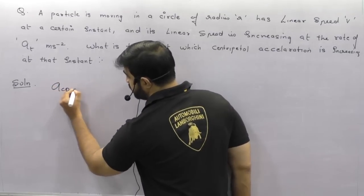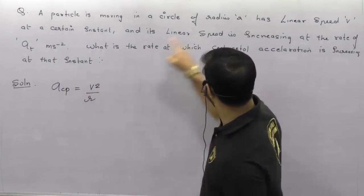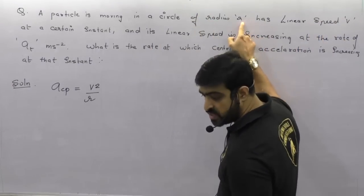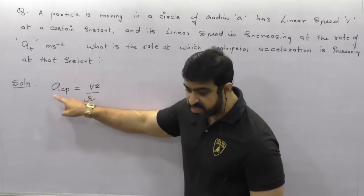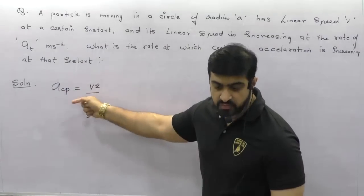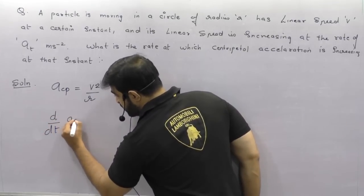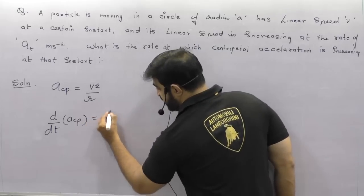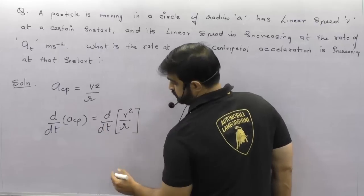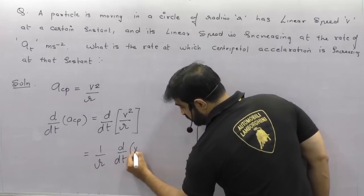We know centripetal acceleration formula is V²/R. Because they are using V in the question, we will use V only, and R is the radius. We want the rate of change of centripetal acceleration at that instant. Whenever there is a rate of change, we differentiate with respect to time. So d/dt of a_cp = d/dt of V²/R. R is a constant, so this becomes (1/R) · d/dt of V².